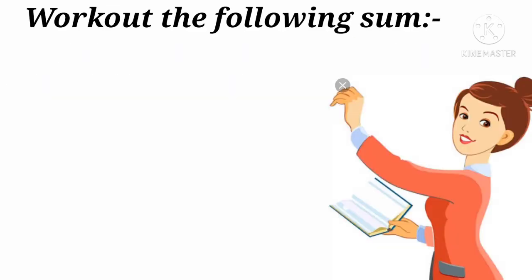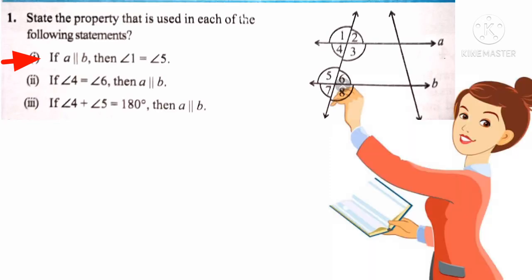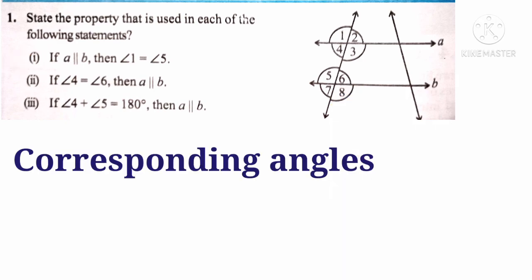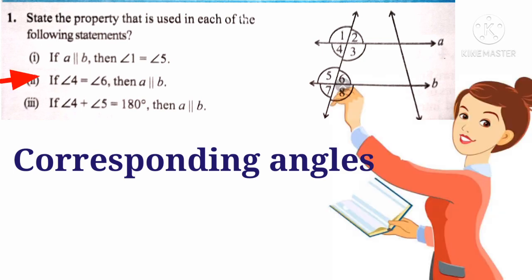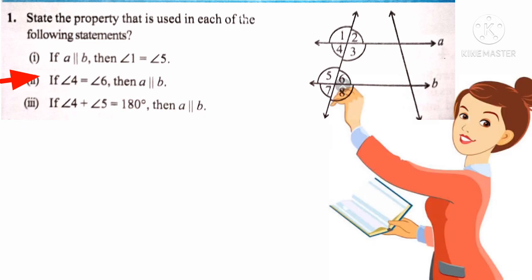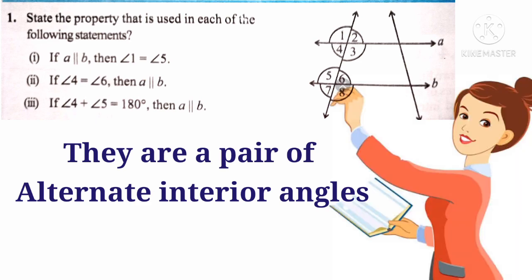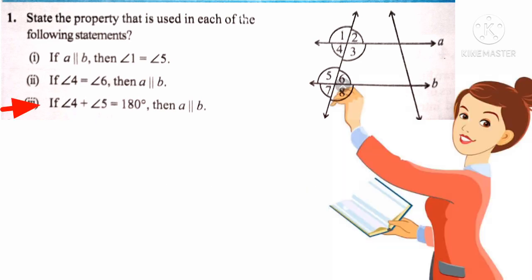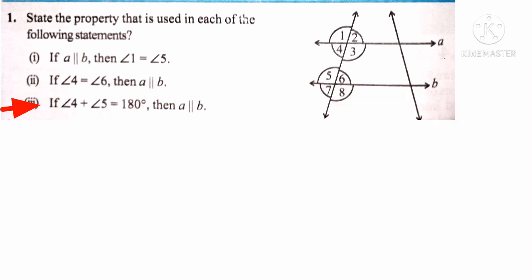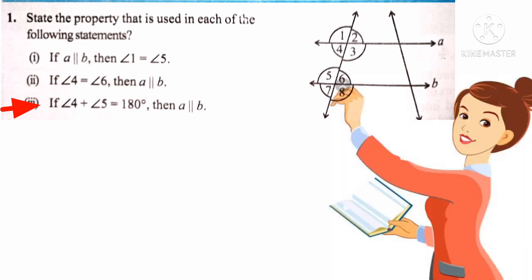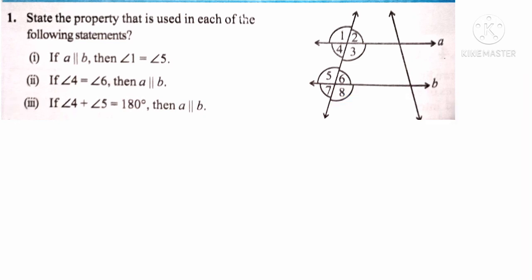Let us work out the following. First: state the property — if a is parallel to b, then angle 1 is equal to angle 5 because they are a pair of corresponding angles. Second: if angle 4 is equal to angle 6, then a is parallel to b because they are a pair of alternate interior angles. Third: if angle 4 plus angle 5 is equal to 180 degrees, then a is parallel to b because they are interior angles on the same side of the transversal and their sum is 180 degrees.